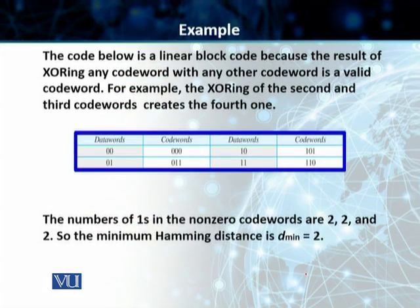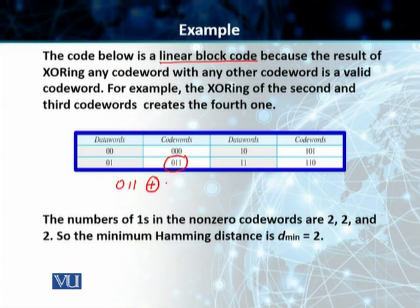On the slide, you can see a code which is a linear block code. We can test this by taking the exclusive OR of the second codeword, 0,1,1, and the third codeword, 1,0,1. The result comes out to be the fourth codeword, 1,1,0. So this code is an example of a linear block code.